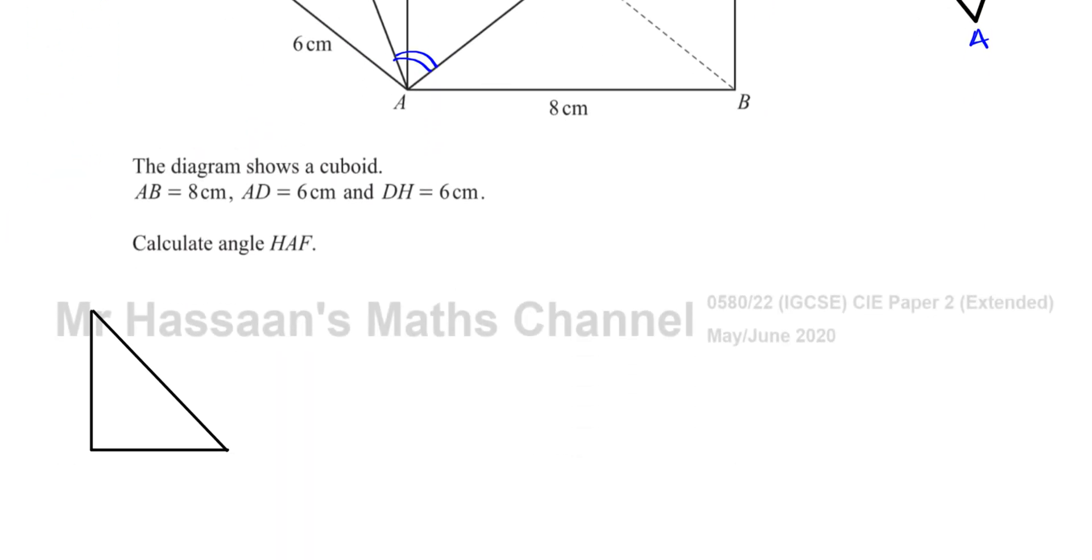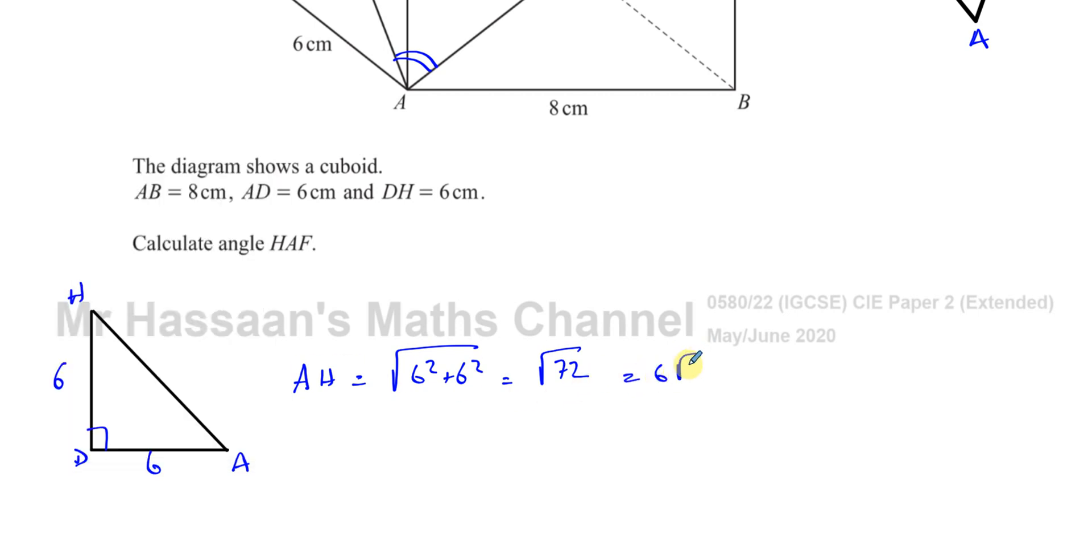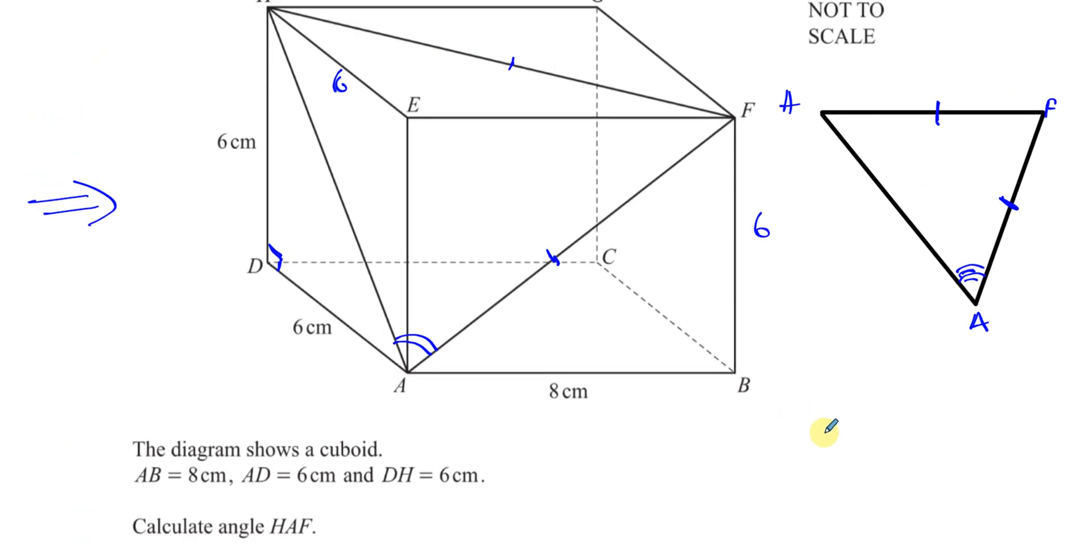I'll have H, D, A. This is a right angle. This is 6 centimeters. This is 6 centimeters. So we can say AH, using Pythagoras, is going to be the square root of 6 squared plus 6 squared, which is the square root of 72, which gives us 6 root 2. So this is 6 times root 2, that's AH. So I've found now this is 6 times root 2 centimeters.